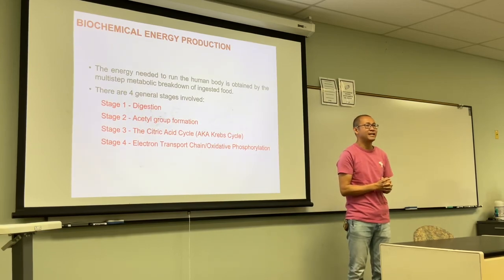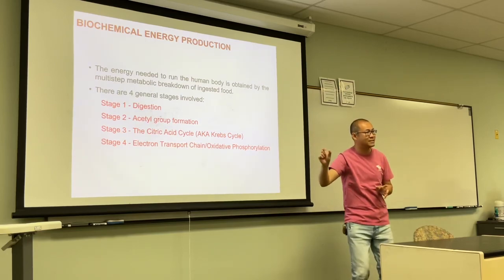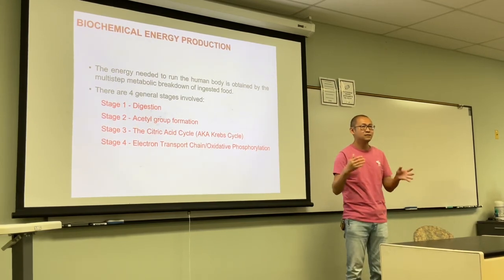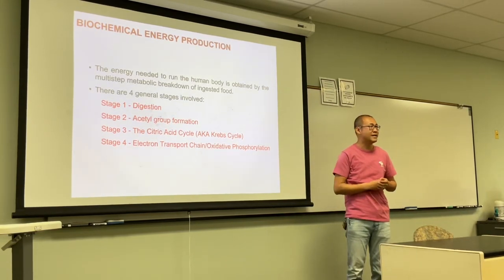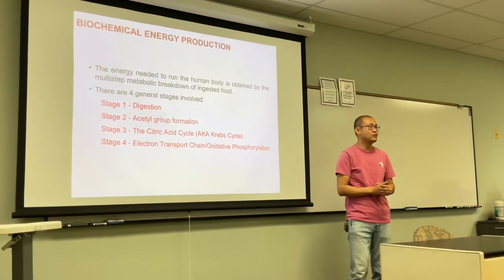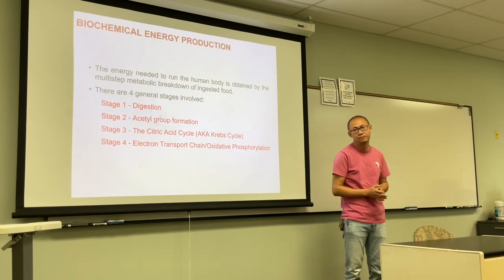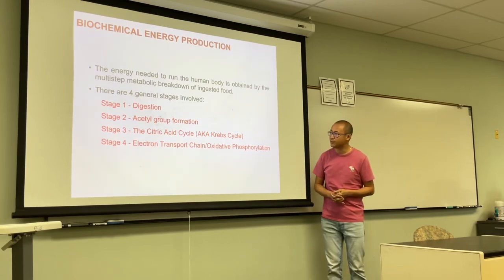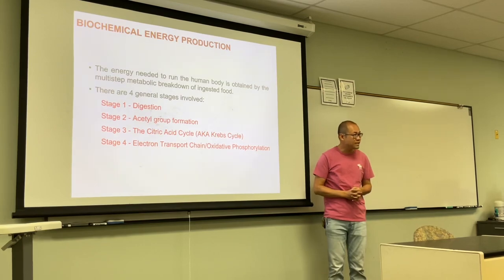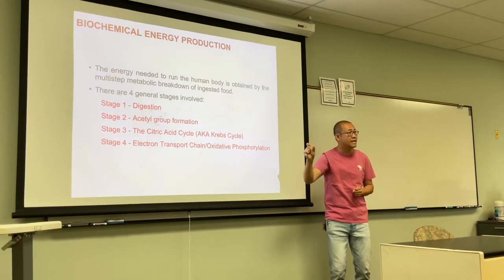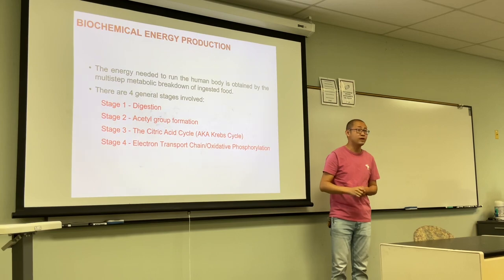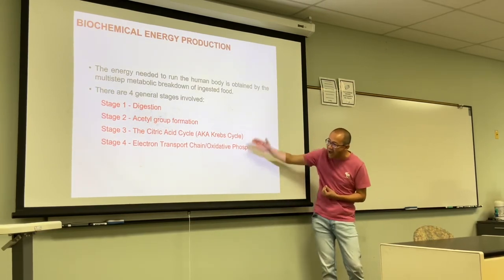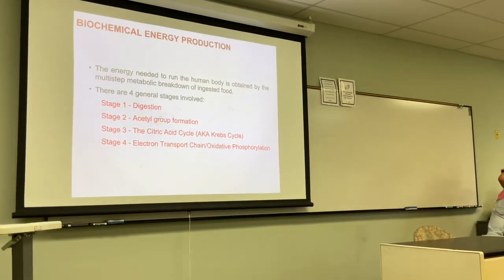Now let's take a look at a simplified version of catabolism and how energy is produced. This can be coarsely separated into four stages. We're doing the very superficial part of biochemistry — this one chapter summarizes probably five or six chapters of a full biochemistry course. These four stages are in the direction of catabolism, breaking down large molecules. Let's take a look at each stage, what the products are, and how energy is produced.